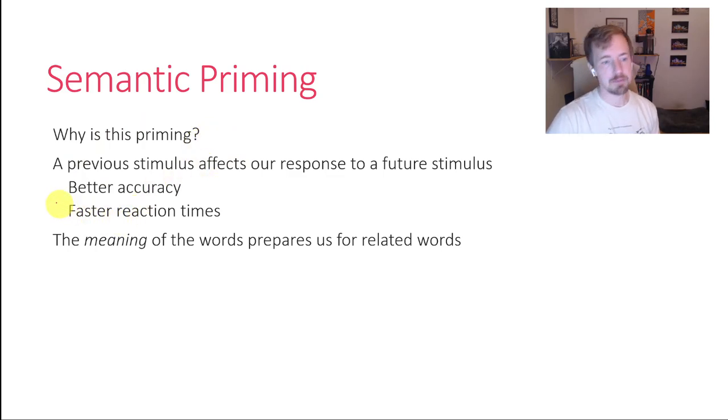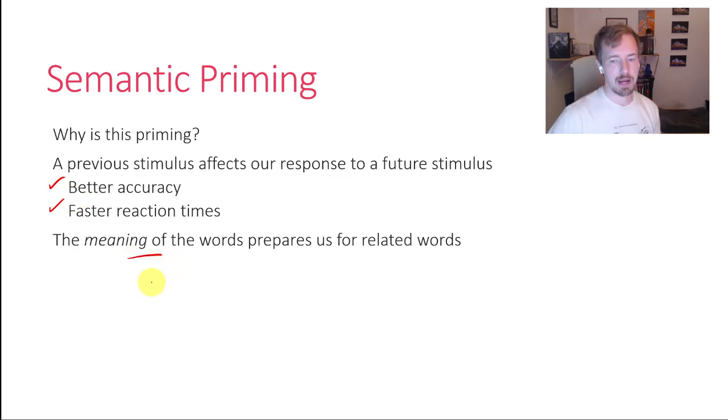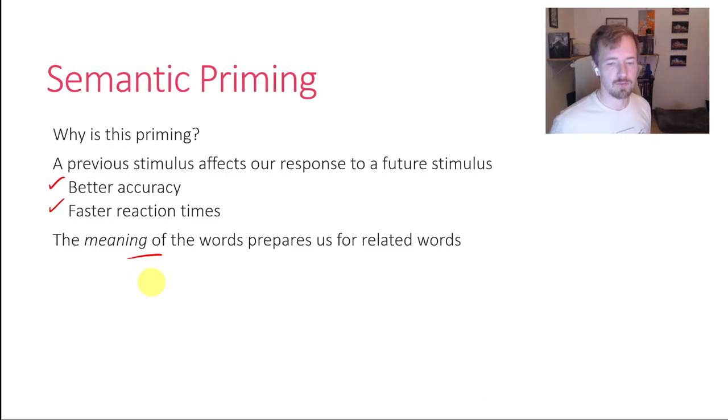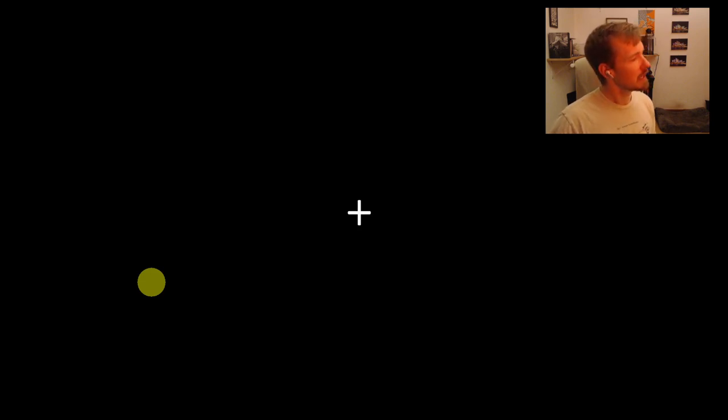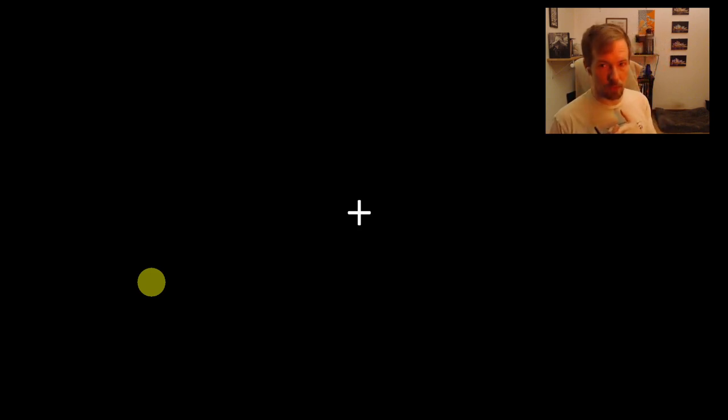When something is being primed, you get better accuracy and faster reaction times. We can also see that the meaning of words primes us for related words — this is semantic priming. For example, if the next word after 'surgical' was 'nurse,' you'd respond very fast because it's related. But if the word was 'pantaloons,' you'd be slower — it's not a common word and it's not related to nurse, surgical, or lesions.